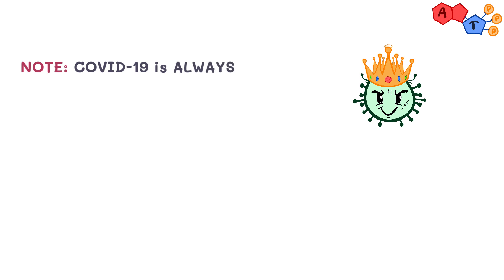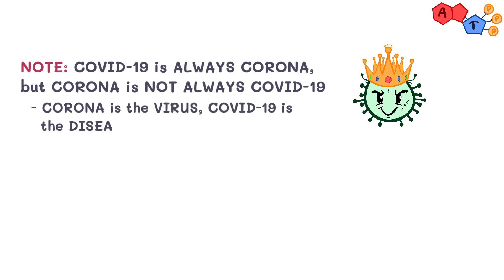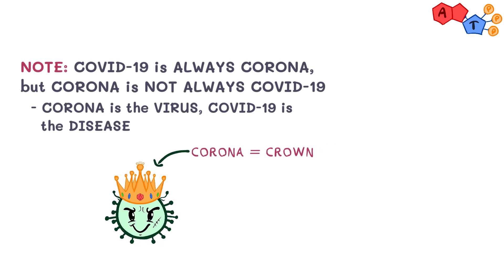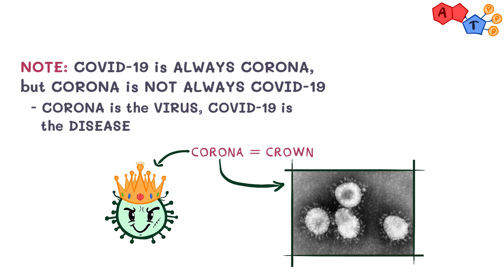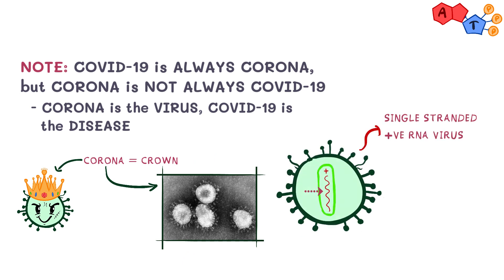Make no mistake: COVID-19 is always corona, but corona is not always COVID-19. Corona is the virus; COVID-19 is the disease. Corona in Latin means crown, and that's how coronavirus variants look on electron microscopy. Coronavirus is a single-stranded, positive-sense RNA virus. Its capsid is helical in shape and it's covered by an envelope.